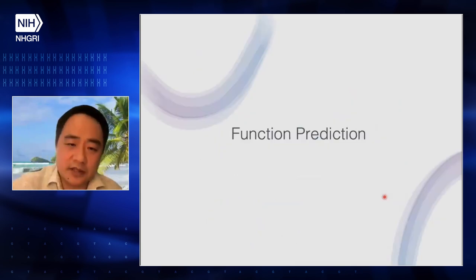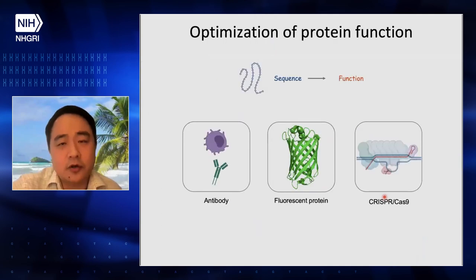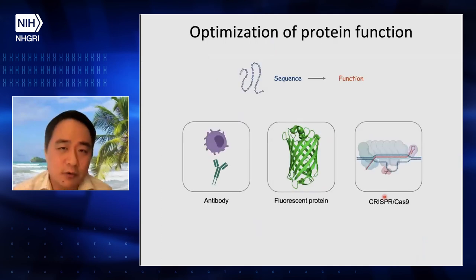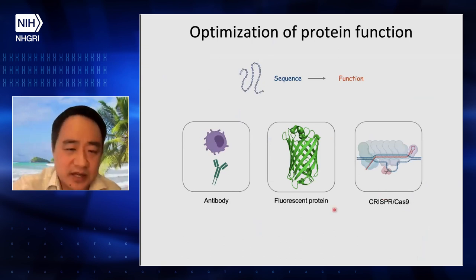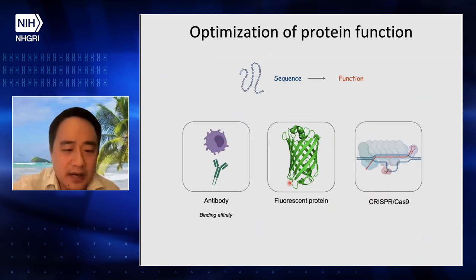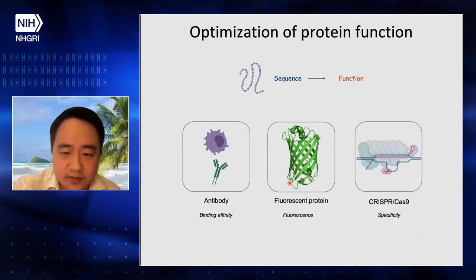In the rest of this talk, I'll move a little bit away from structure prediction and focus on function prediction. Beyond structure prediction, what we really want to know is the protein function: given a protein structure or sequence, we want to understand its function. This has many applications — we can use it to improve binding affinity of antibodies, optimize fluorescent proteins, or improve the specificity of gene editing.